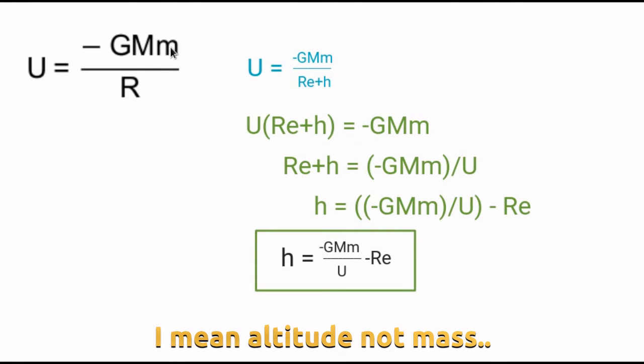Let's rearrange this formula to solve for mass. First, we move Re+h (the radius of the Earth plus the altitude) to the left side by multiplying both sides. Then we divide both sides by U, so we take U and move it over by dividing.